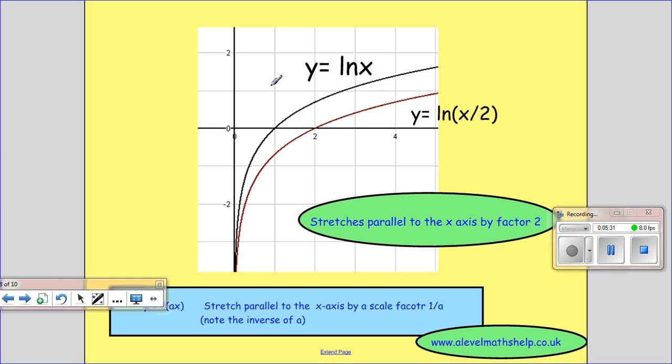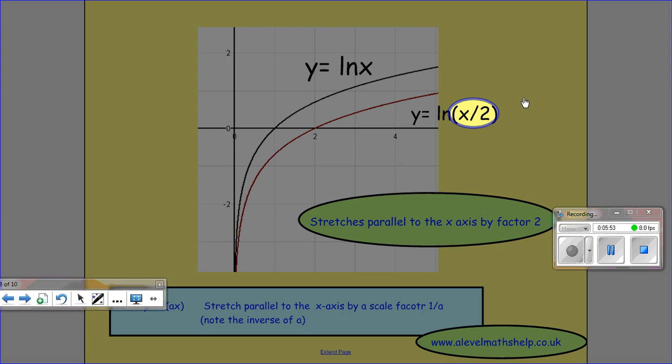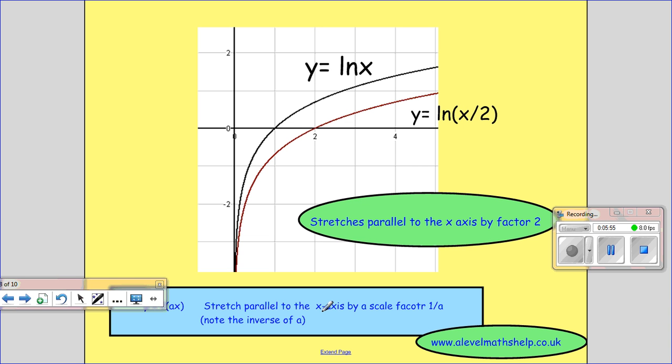OK, so this is the y equals ln x graph. And actually, y equals ln x is a graph which is the inverse of y equals e to the x, which is a reflection in the y equals x line of y equals e to the x. OK, so what we've got, we've got an in-function change. And so this will give us a stretch parallel to the x-axis by a scale factor of 1 over a.